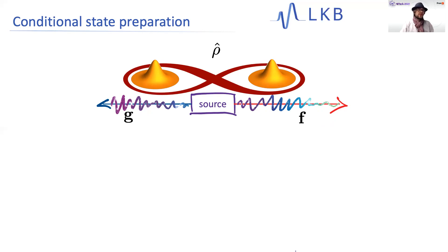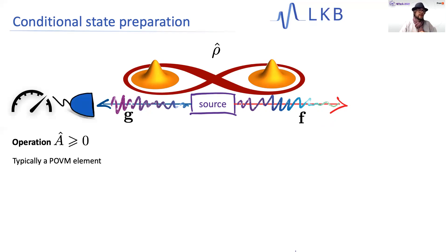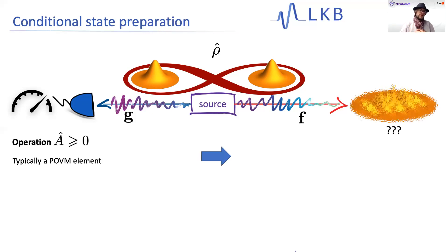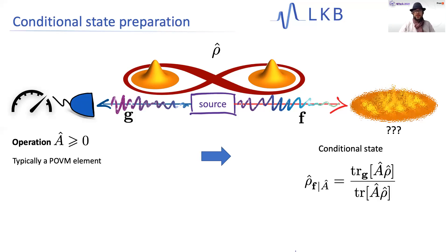Then we perform some operation — typically a measurement — on one part of the system. And then we condition on a particular measurement outcome, so a particular POVM element. This is going to herald and create a conditional state on the other side of the system. Formally, we know that the conditional state's density matrix is given as follows: you act with this POVM element on the full state of g and f, then trace out the mode g, and renormalize everything with the success probability.